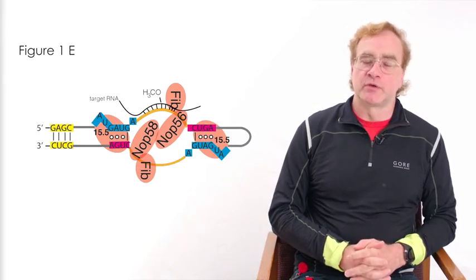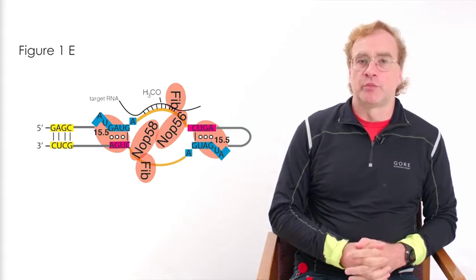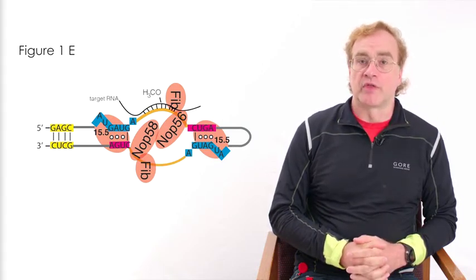First of all, half of the human snoRNAs have no predictable targets, so we don't know their function.